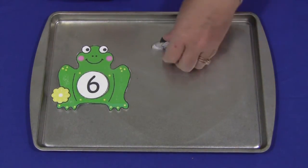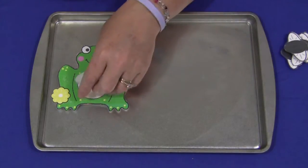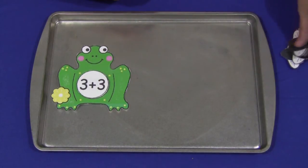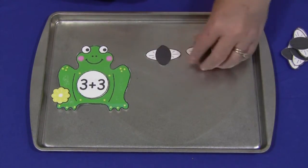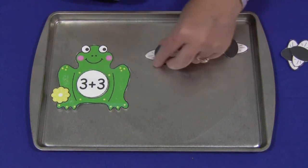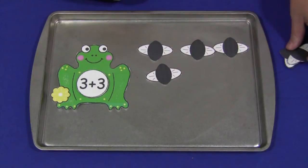So besides number circles, as I said, I have blank circles that you can write simple math equations on. So this we have three plus three. So the child would put three flies down.